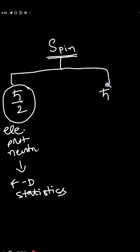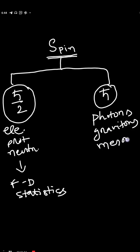Whereas integral spin particles like photons, gravitons, mesons, etc., obey Bose-Einstein statistics.